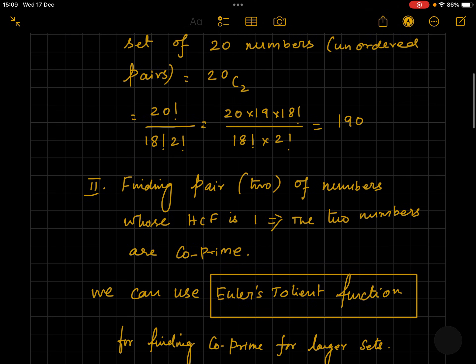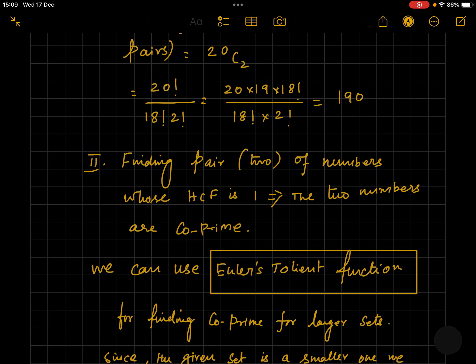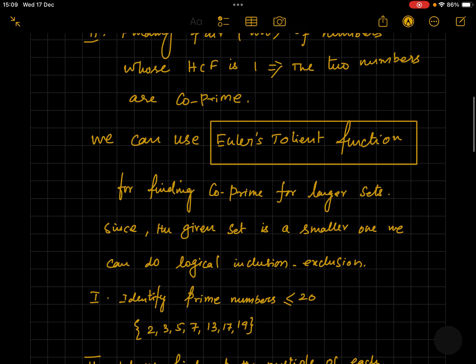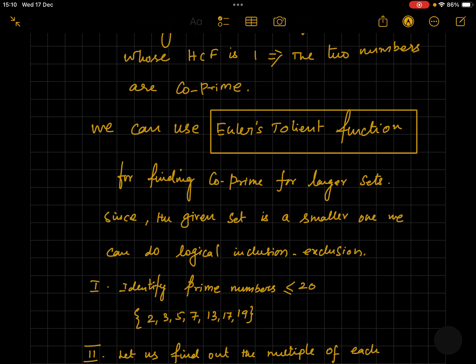Now let's find the pairs of two numbers whose HCF is 1. It means that the two numbers are co-prime. For that, we can use Euler's totient function that is generally used for large sets. However, let's use logical inclusion-exclusion for this smaller set of 20 numbers.